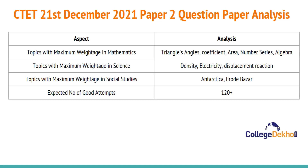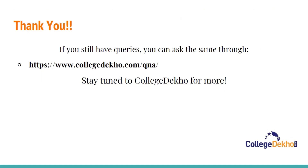The topics with maximum weightage in Mathematics were triangles, angles, coefficient, area, number series, and algebra. The topics with maximum weightage in Science included density, electricity, and displacement reaction. The topics with maximum weightage in Social Studies included Antarctica and Erode Bazaar.